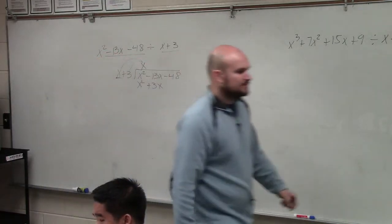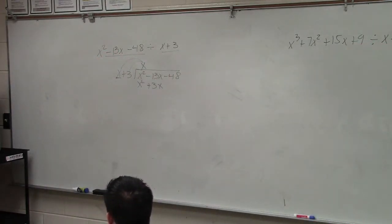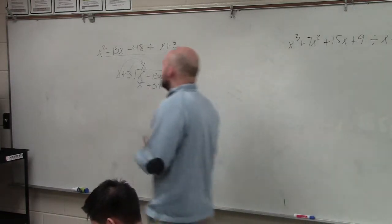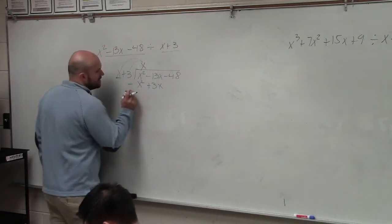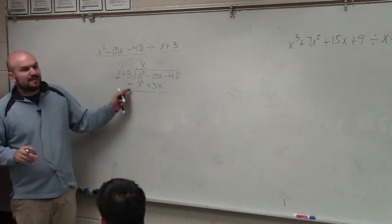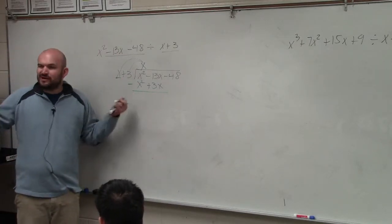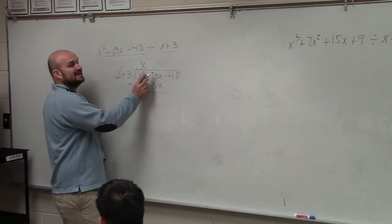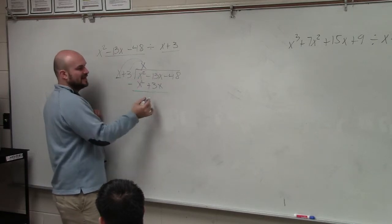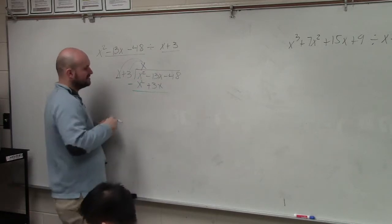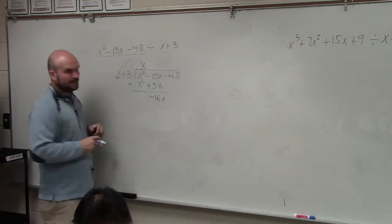Then what we simply do is we subtract our rows. And it's very important when you're doing this that you're very diligent and careful with your work. x² minus x² is 0x², or just 0. -13x minus 3x is -16x.